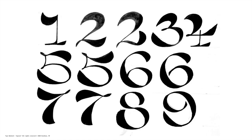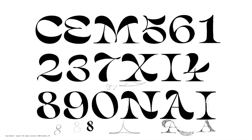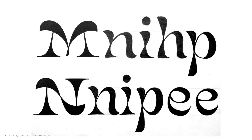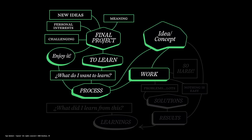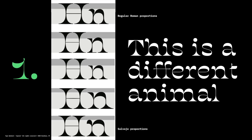Then came the process of working — tons of work, tons of sketching. I started from the numbers and then moved into the caps. This is not the regular way to approach a typeface, but this was the way of Salvaje. It was so difficult — I couldn't find the right proportions, it was really tricky to find the balance between lowercase and uppercase, even the shapes. After all that excitement about the idea, I realized: this is really hard. There are tons of problems. This is not easy at all.